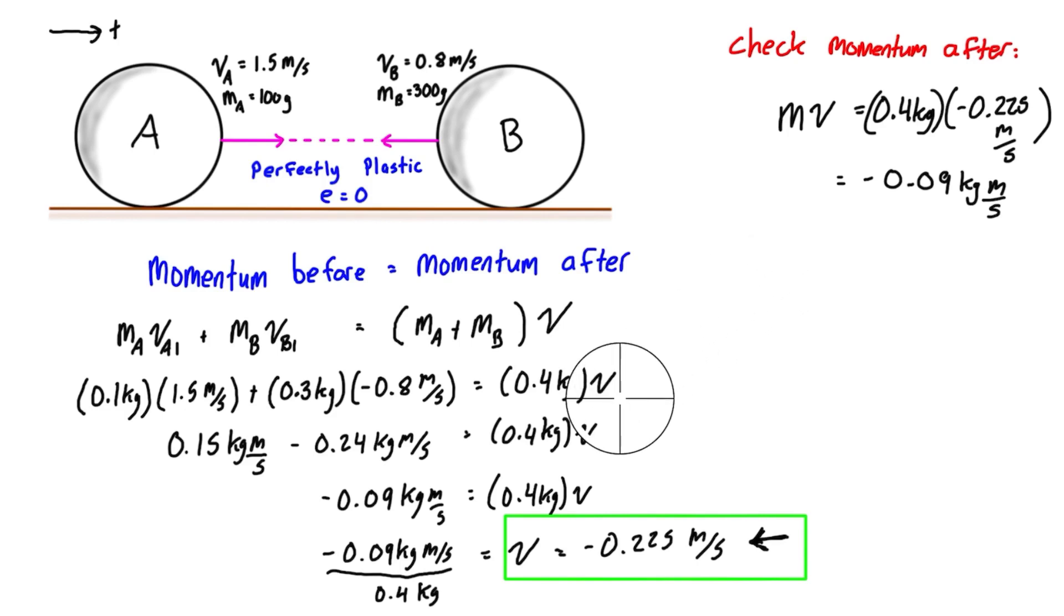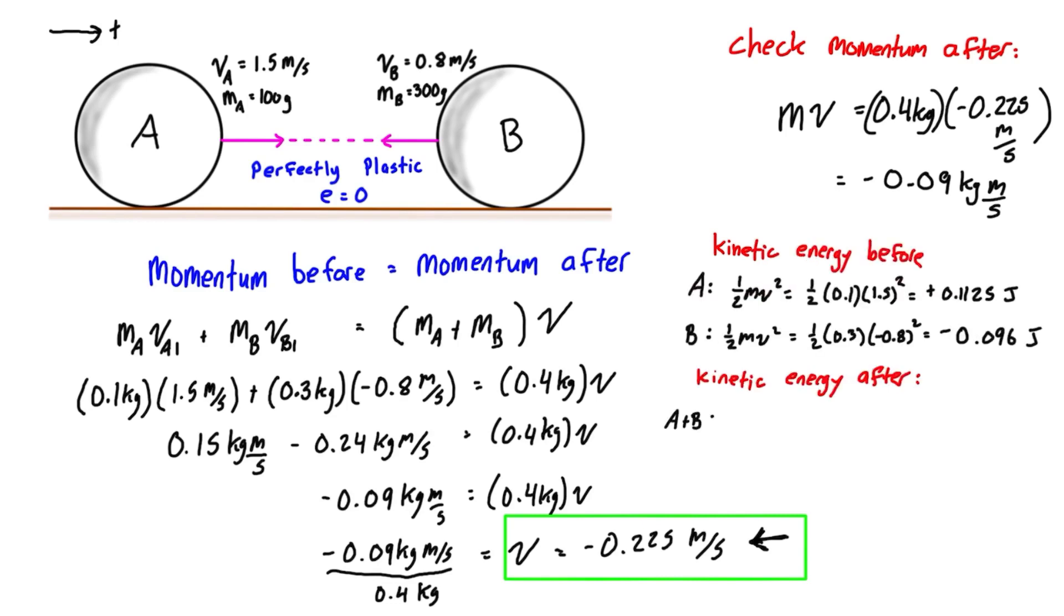We can write the kinetic energy of A and B before impact, and then check the kinetic energy after impact of A and B moving together with that velocity we calculated. For before, we need to sum these. I've put a negative sign here—it actually computes as positive, but because we know it's going to the left, they're going to net out to a value with one going positive and one going negative. So the sum is just 0.0165, which is 0.386.